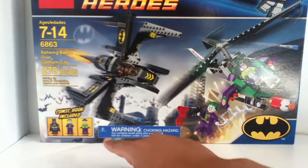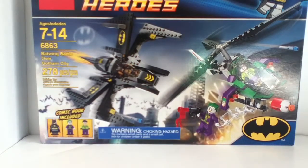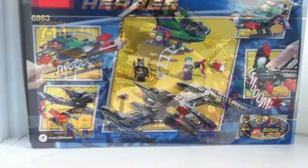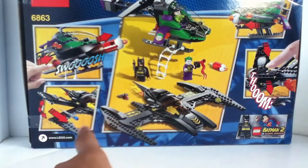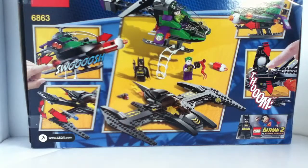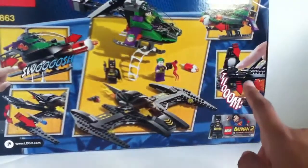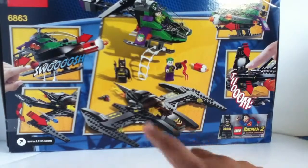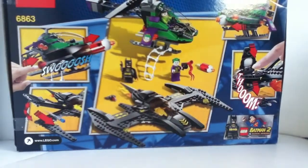Three minifigures, so yeah, that's the front of the box. On the back of the box shows some of the play features like flick fire missiles, torpedoes, a missile and Joker's helicopter, and the whole set. So let's get on to the sets.